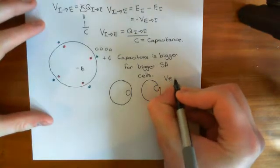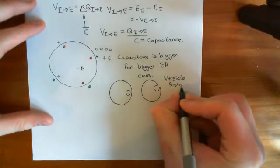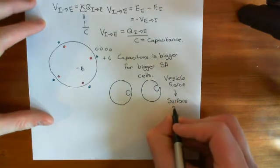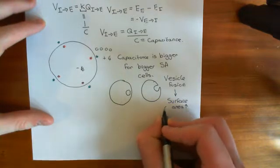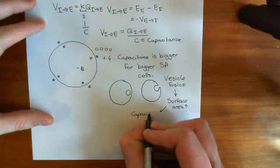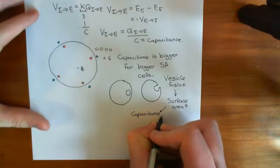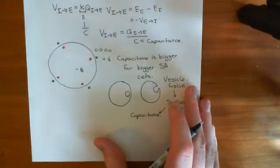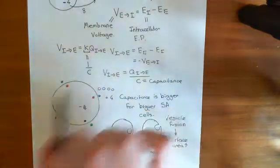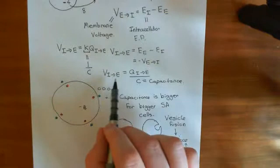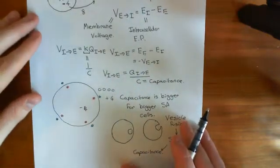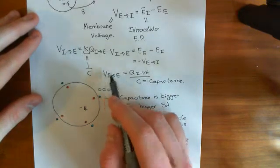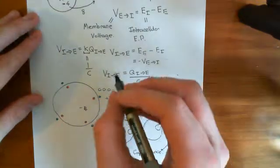Vesicle fusion causes surface area of the cell to go up, and that causes capacitance to go up. One more thing I want to talk about — before discussing the actual experiment — is the units of capacitance. I should have talked about this when I wrote out this equation. So the units of capacitance: let's work it out from the equation, using the standard units for voltage, charge, and therefore capacitance.